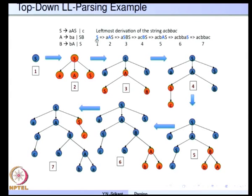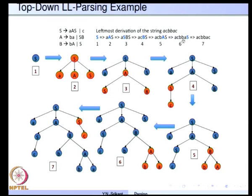Starting from S, we apply S → AAS, then A → SB to get AASBS. The leftmost non-terminal S is expanded by S → C, giving AC...BS. Then B is expanded by B → BA to get ACBAS. A is expanded by A → BA giving ACBBAS, and finally S is expanded to C, yielding ACBBAC. This is the leftmost derivation of the string.